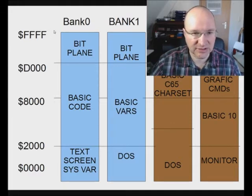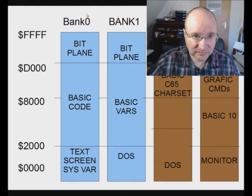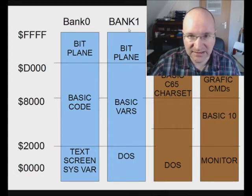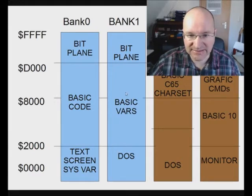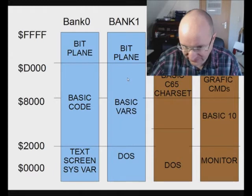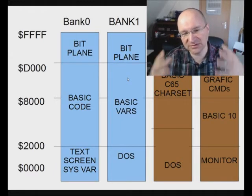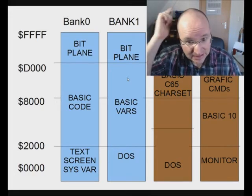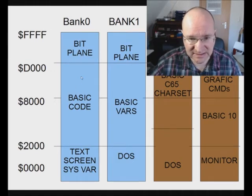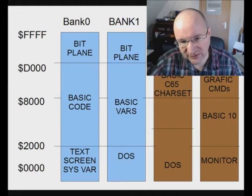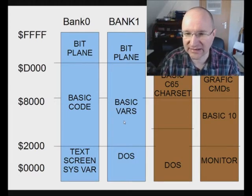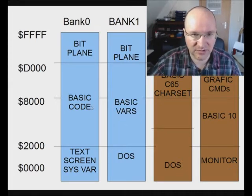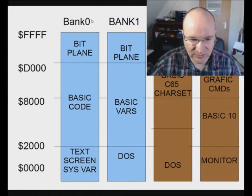Looking briefly at the memory layout — we need this to understand the rest of the lesson. At bank zero there is the BASIC code, and at bank one there are the BASIC variables. By default when a BASIC program starts, the bank is switched to one, because the Commodore 65 developers assumed we mainly want to work on BASIC variables. So our POKE went to bank one, possibly corrupting a variable rather than modifying the code.